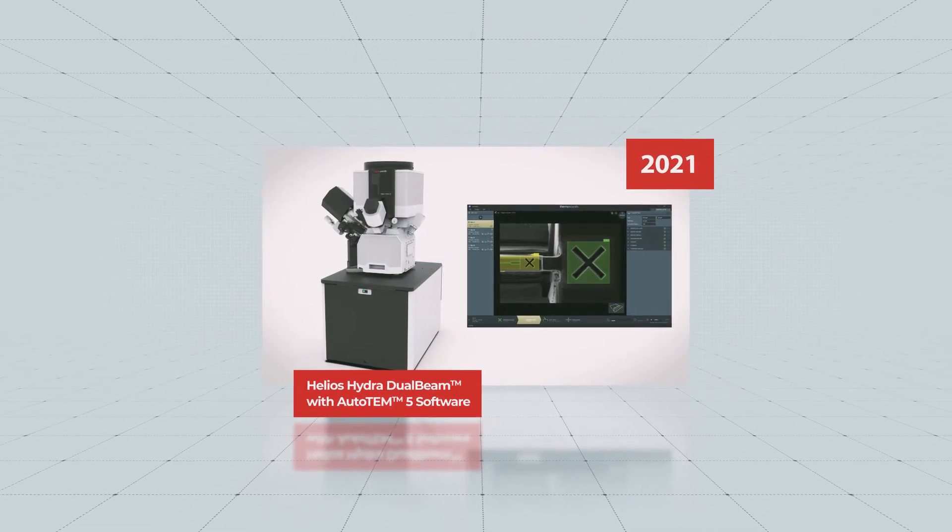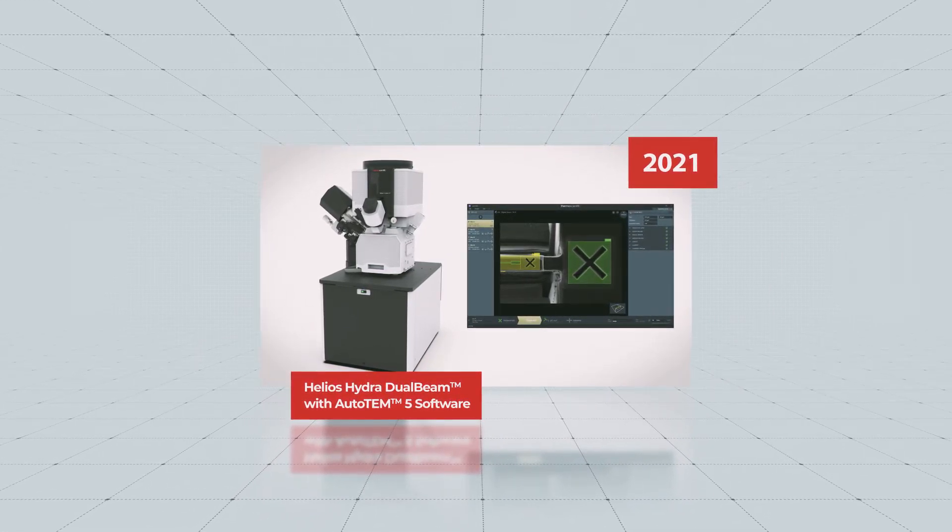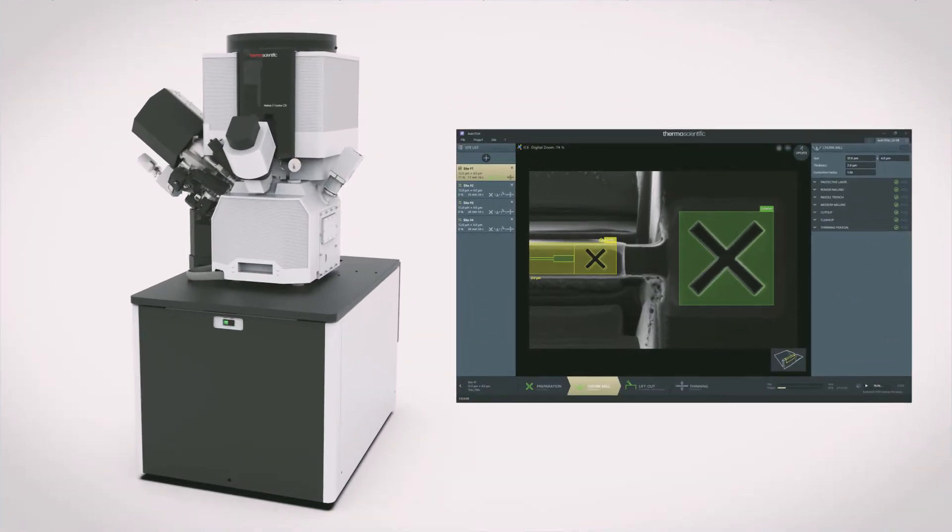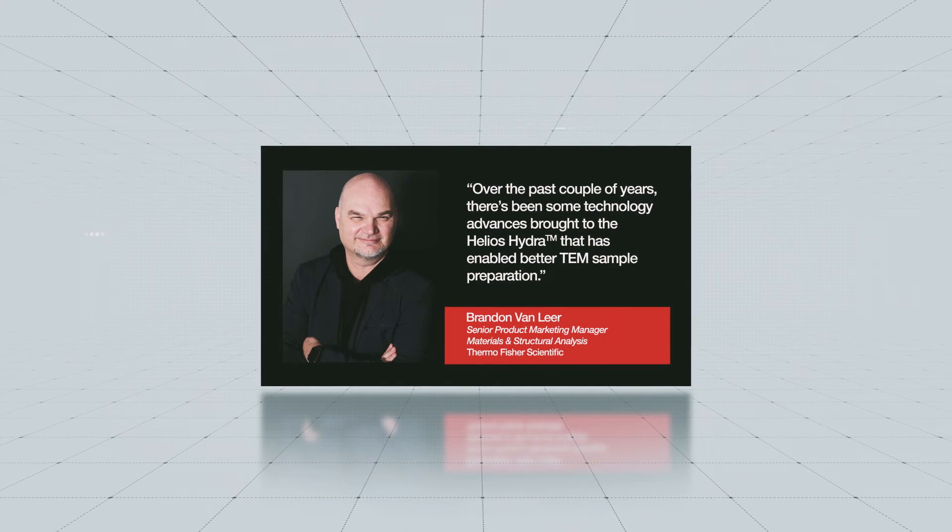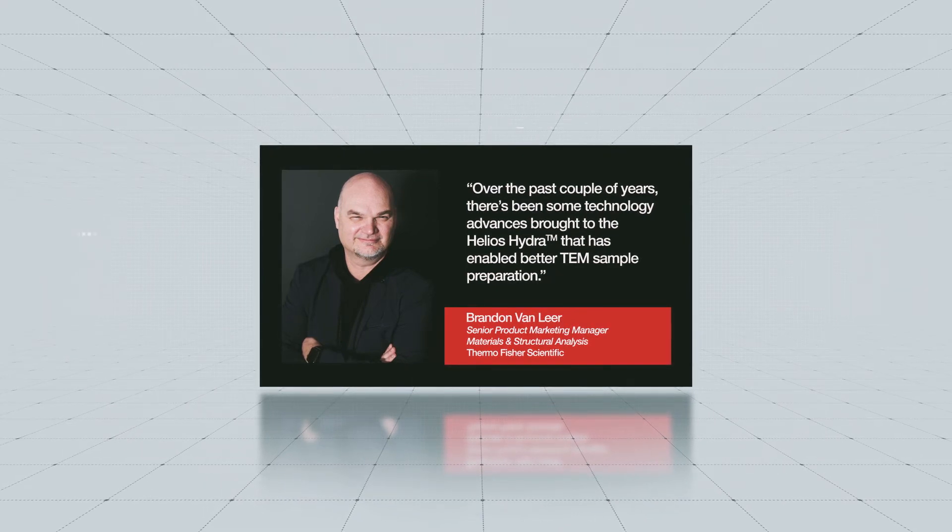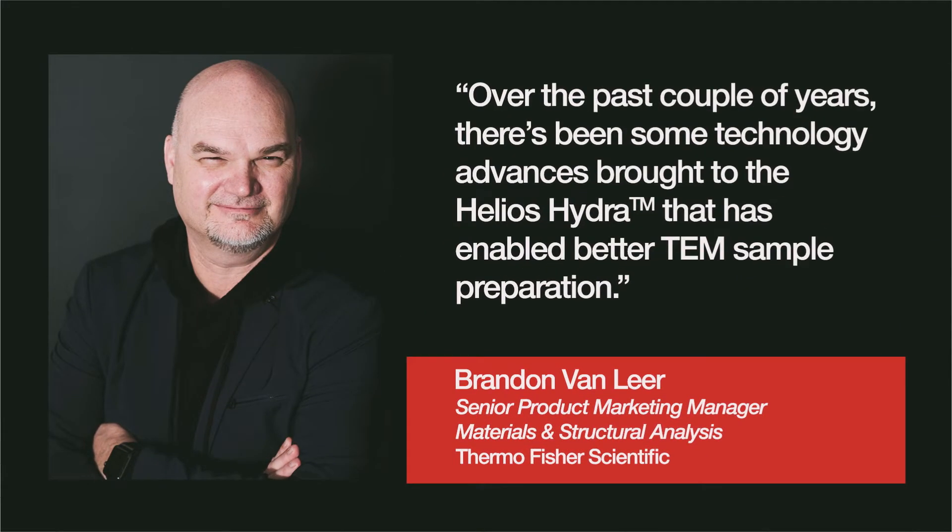And in 2021, the newest generation of the Helios Hydra dual beam became compatible with AutoTEM 5 software for fully automated sample preparation using various ion species. Over the past couple of years, there's been some technology advances brought to the Helios Hydra that really has enabled better TEM sample preparation. And two of those are, first, the ability for a user to be able to use ultra-low voltage ions for their final polishing steps.